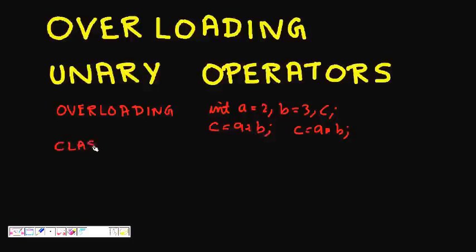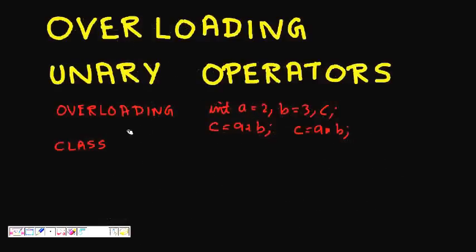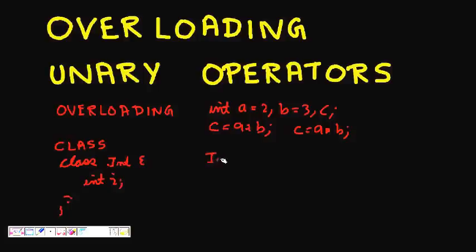In C++ we have classes. Let's say if we have a class called integer which has a member int. If we have this kind of class and we want that the objects of this class also behave similarly — I have a class integer and I have some data member int i.